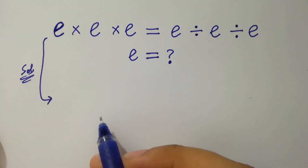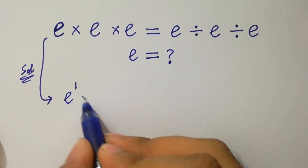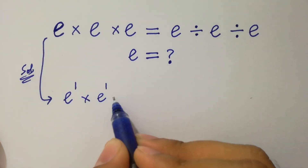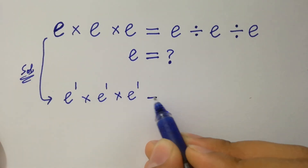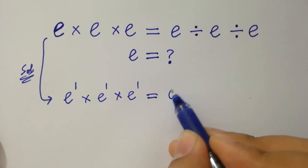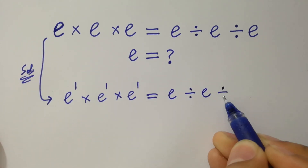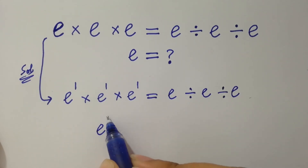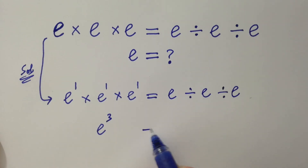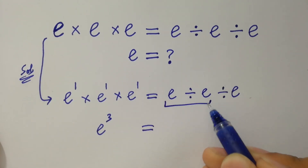On the left hand side, this is the same as e to the power 1 times e to the power 1 times e to the power 1. Applying the base and power rule, it will be e to the power 3.